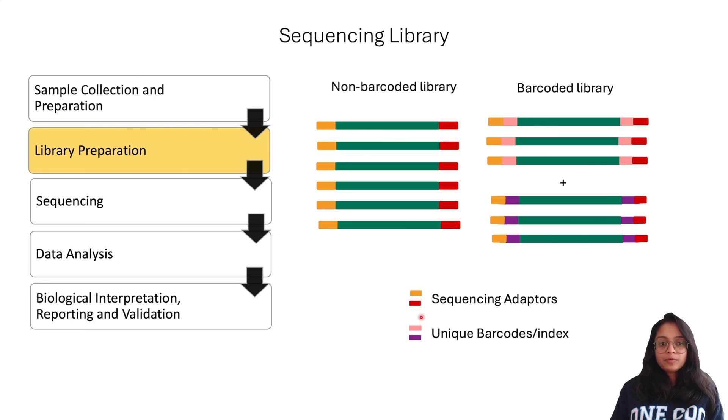At the end of the library preparation step, what we end up with is a sequencing library. A sequencing library is the collection of our DNA fragments along with the sequencing adapters and unique barcodes in case of multiplexing scenario. These are essentially the fragments that the sequencing is performed on.